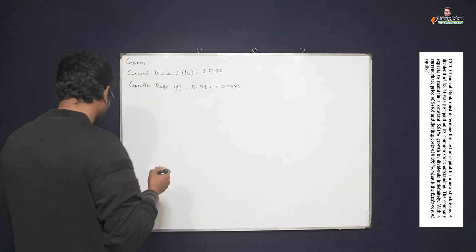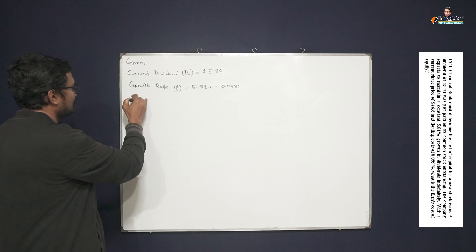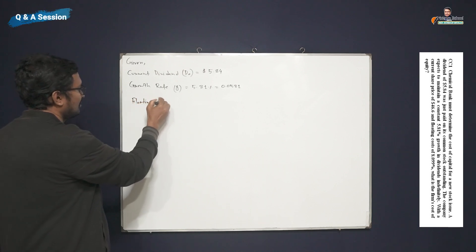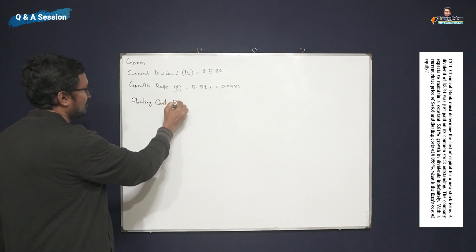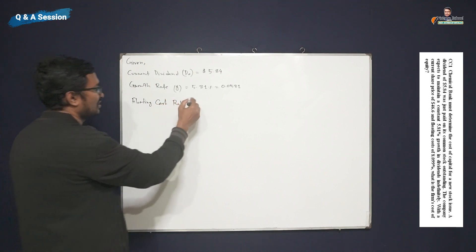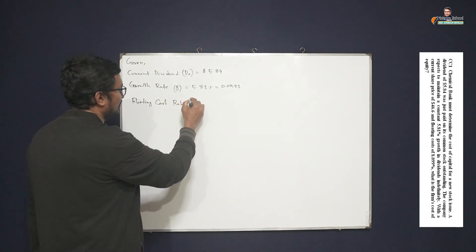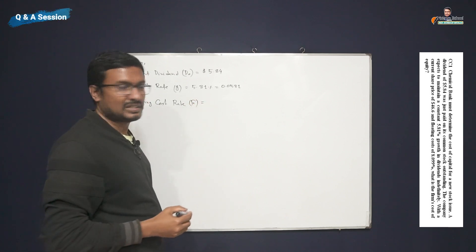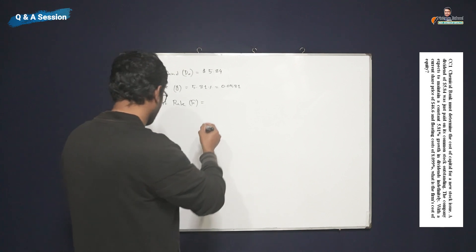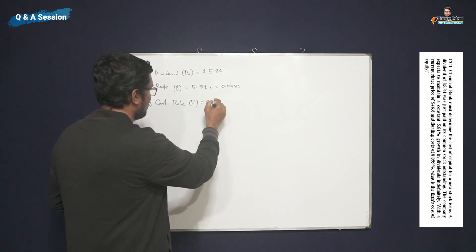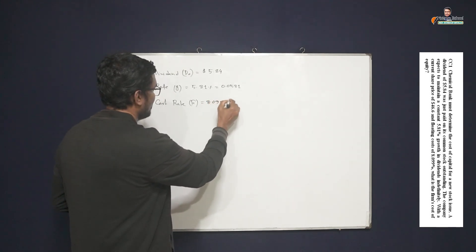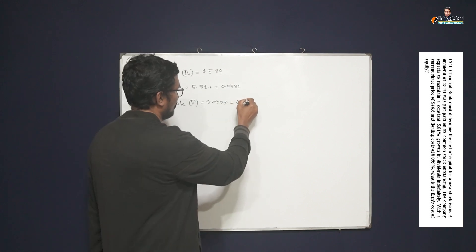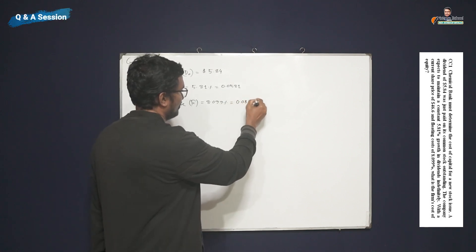Now floating cost rate, which can be denoted by F, and we are given a percentage. The percentage is 8.099%, which is 0.08099.